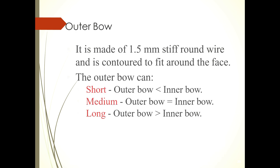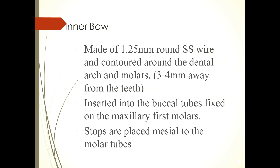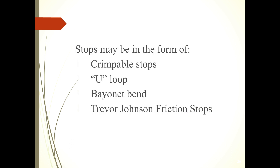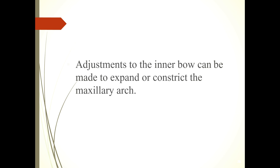The outer bow is made of 1.5 mm stiff round wire and is contoured to fit around the face. The inner bow is made of 1.25 mm round stainless steel wire, contoured around the dental arch and molars, 3 to 4 mm away from the teeth. It is inserted into the buccal tubes fixed on the maxillary first molars, with stops placed mesial to the molar tubes. Adjustments to the inner bow can be made to expand or constrict the maxillary arch.